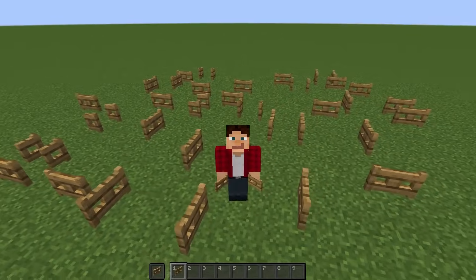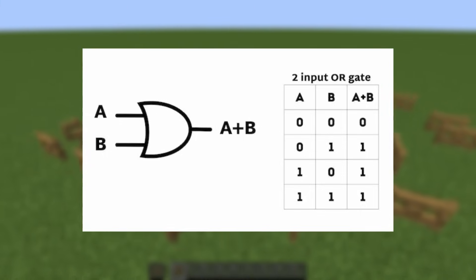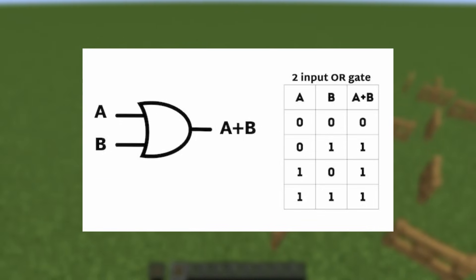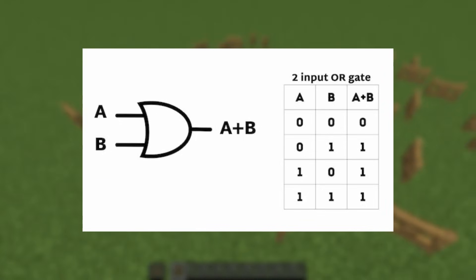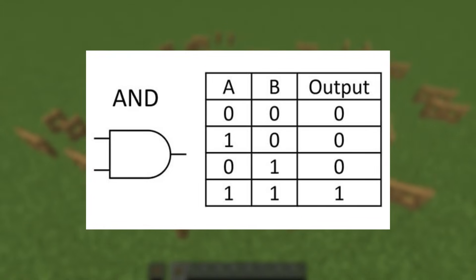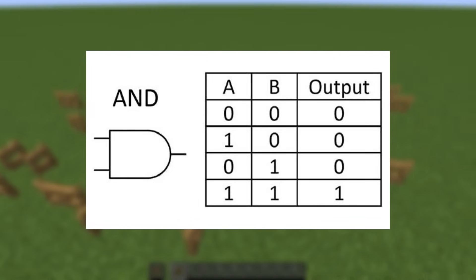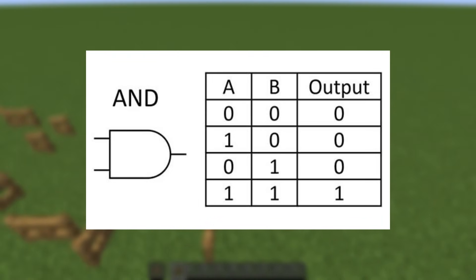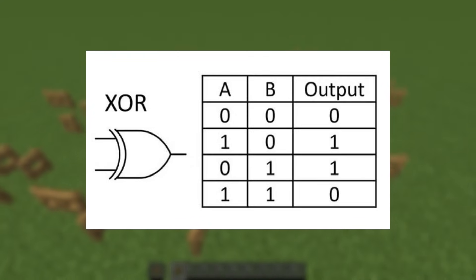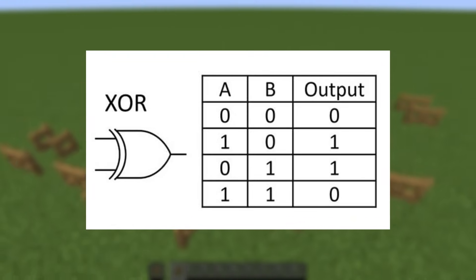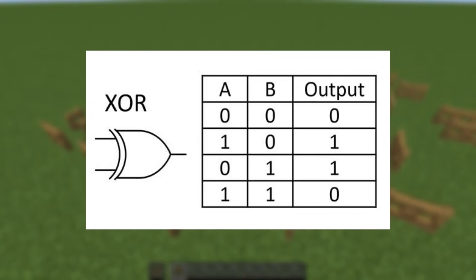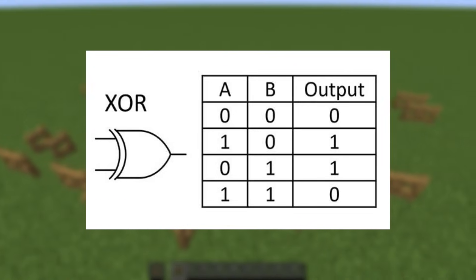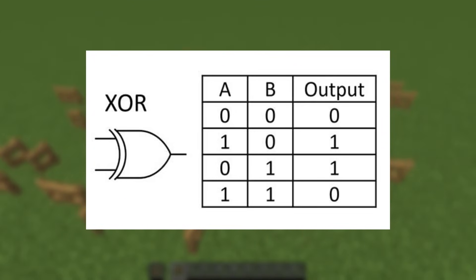And in order to build an adder, we need components called logic gates. Specifically, what we need are OR gates, which give an output if either of the inputs are on. We need AND gates, which give an output only if both of the inputs are on. And we need exclusive OR gates, which only turn on if one of the inputs is on, but not both.